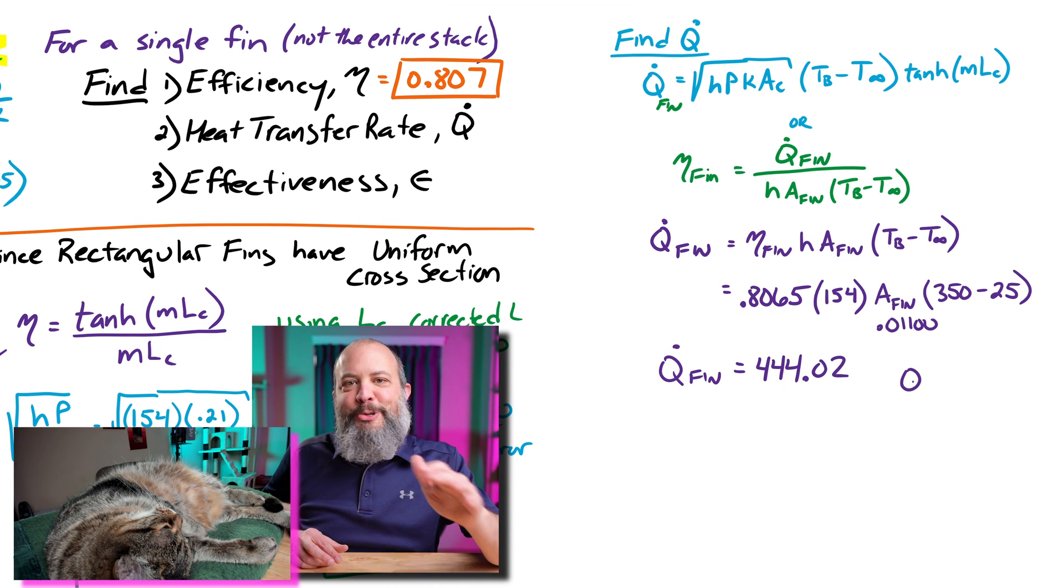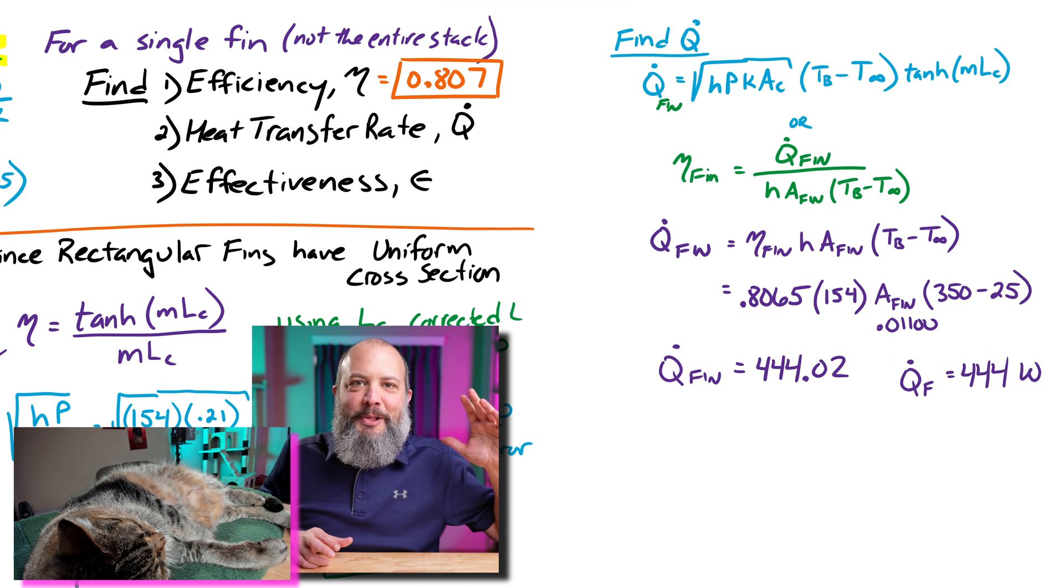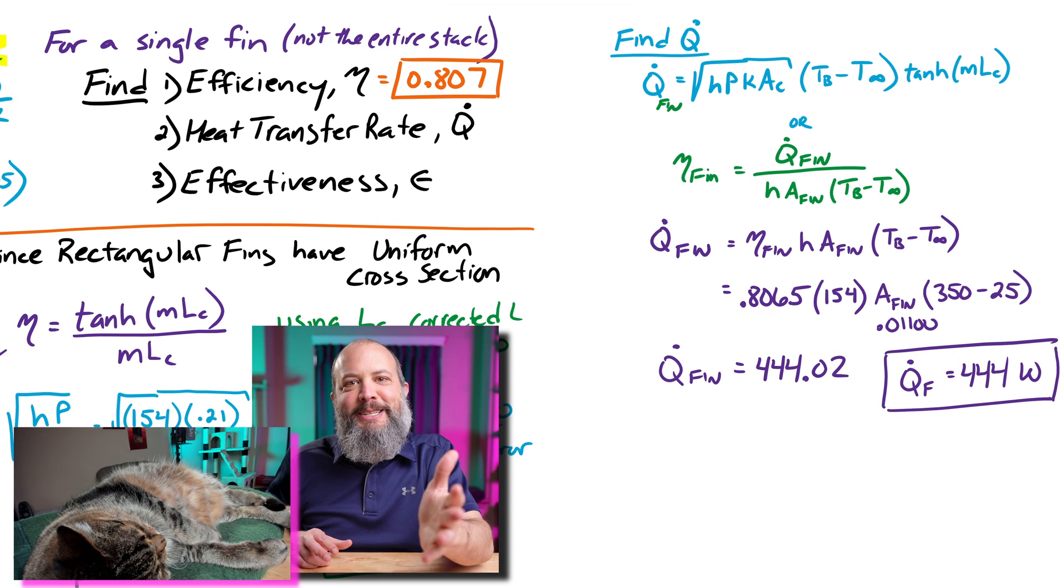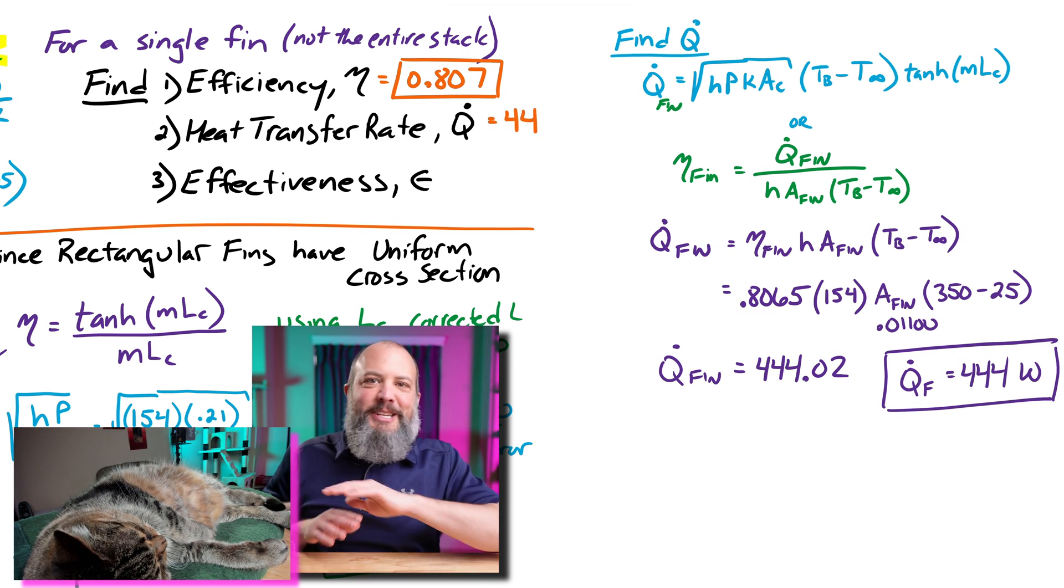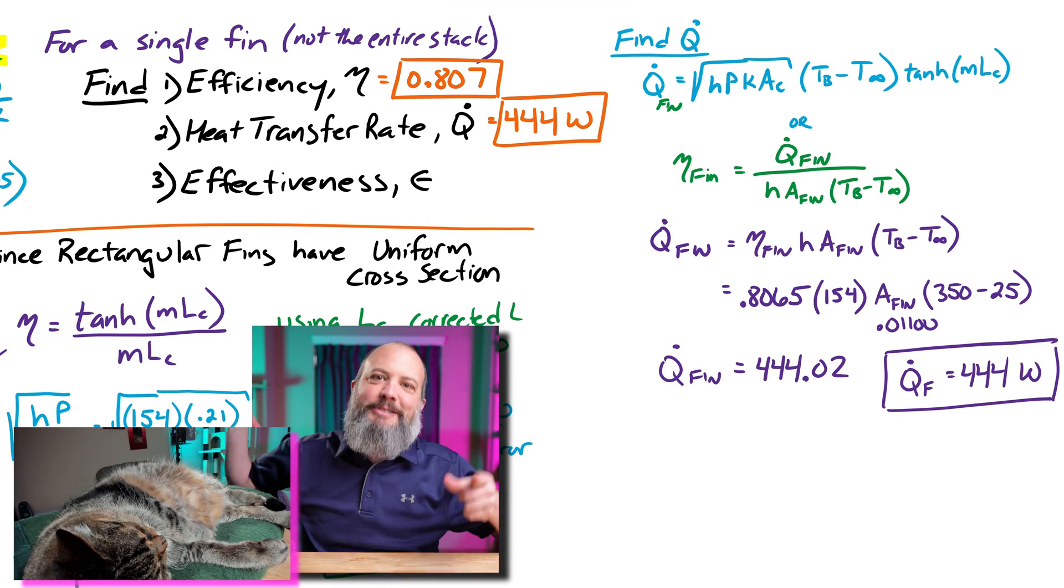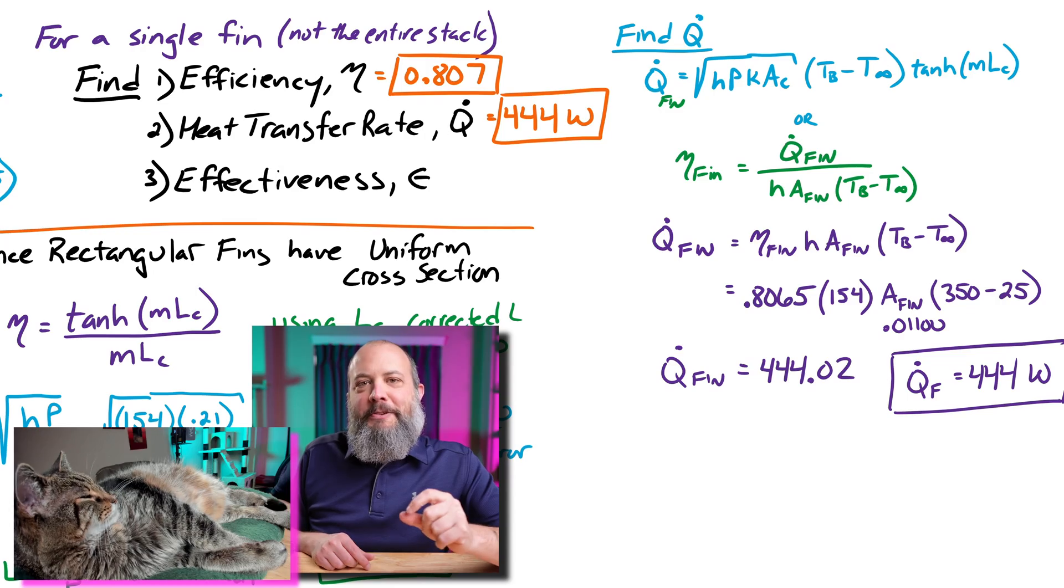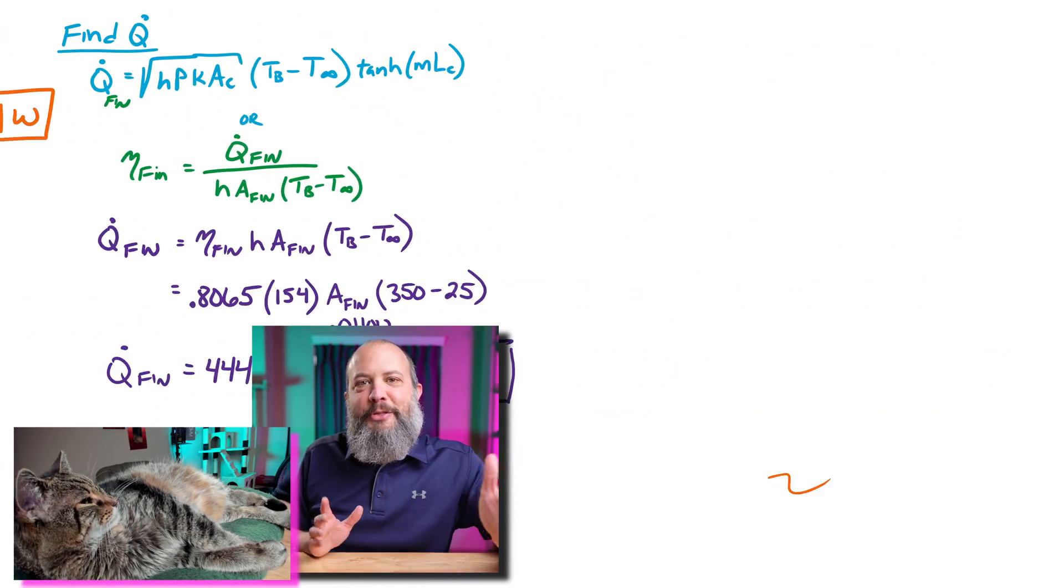No square roots, no hyperbolic tangent. I didn't have to recalculate the fin parameter M, Serenity's number, just one surface area, use efficiency, and done. Okay, not done. We still need to calculate fin effectiveness. There were three things to find, not just two. Sorry, your TA Serenity perked up there for a second. She thought we were done.